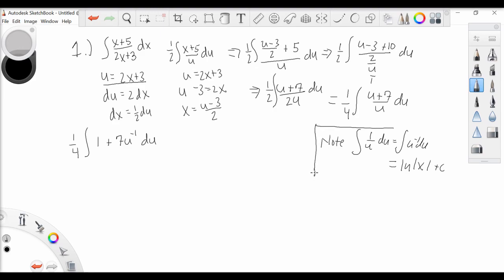So we have one-fourth the integral of u, and then the integral of 7u to the minus 1 is this with a 7, so plus 7 ln of u plus c. But we're not done because we need to get everything back in terms of x.